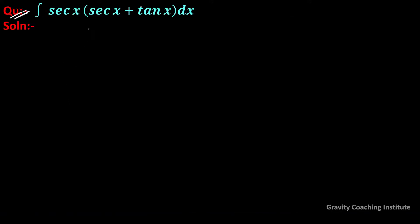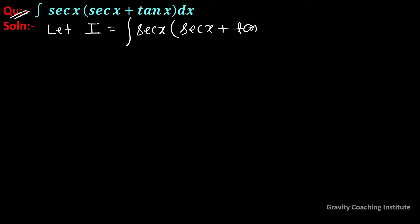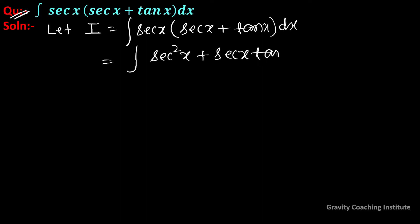The question is to integrate sec(x) into bracket of sec(x) plus tan(x) dx. Let I equal to the integration of sec(x) into bracket sec(x) plus tan(x) dx. Now we multiply sec(x) into both terms, giving sec²(x) plus sec(x)tan(x) dx.